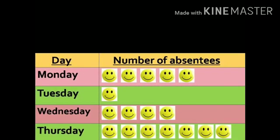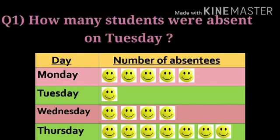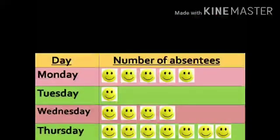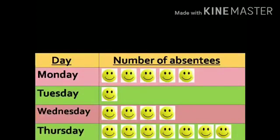Now look at the data and answer the questions accordingly. The first question is: how many students were absent on Tuesday? We can check that there is only one smiley drawn in the Tuesday column. So the answer is one student was absent on Tuesday.